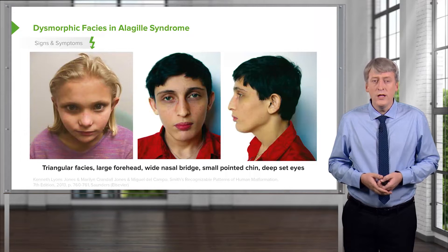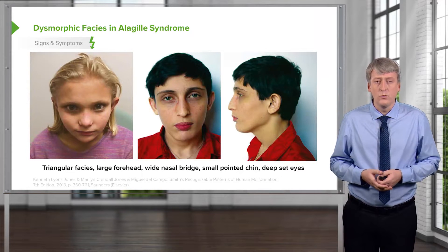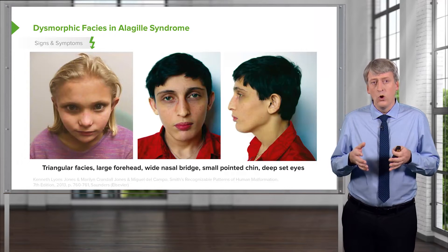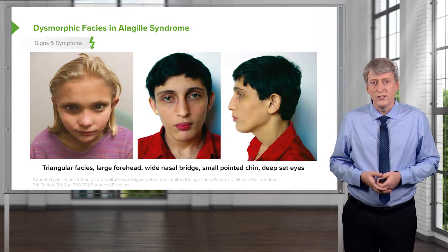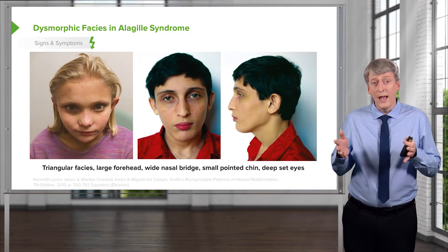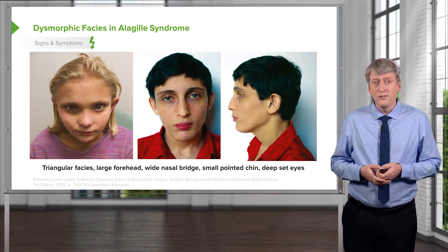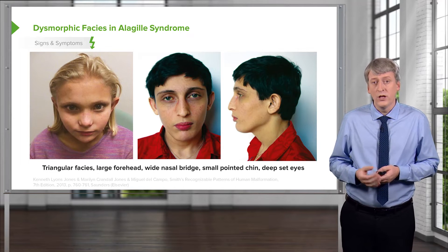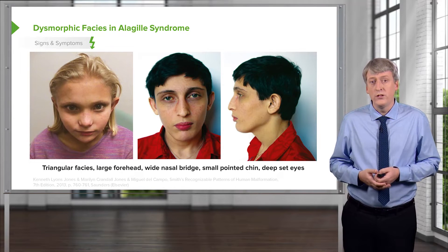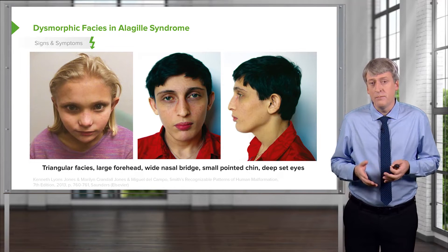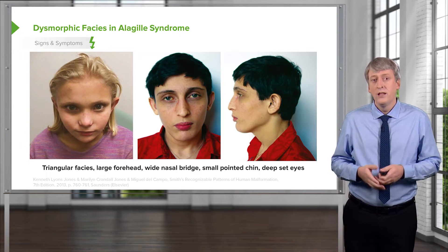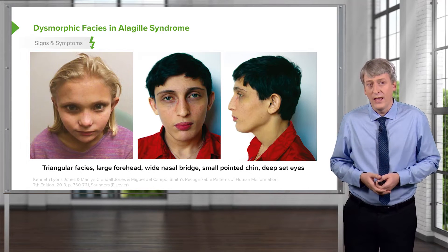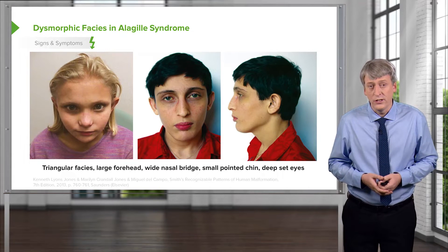Here are some examples of patients with syndromic facies consistent with Alagille Syndrome. You can notice triangular facies, a large prominent forehead, a wide nasal bridge, a small pointed chin, and deep-set eyes. These are all findings consistent with Alagille Syndrome.